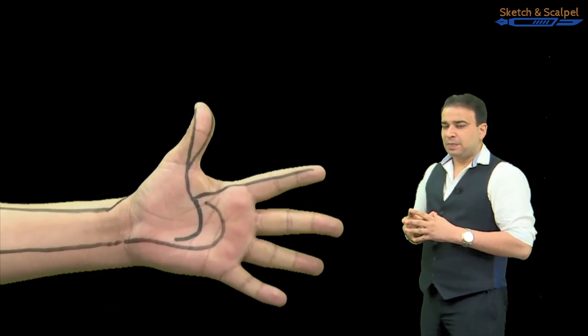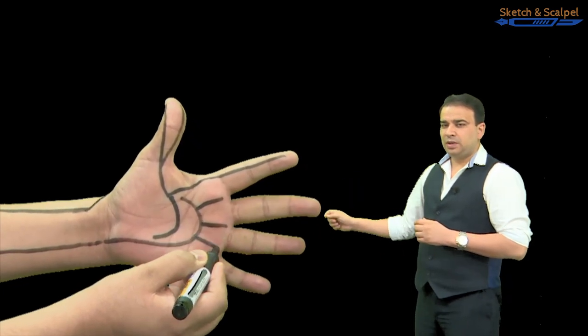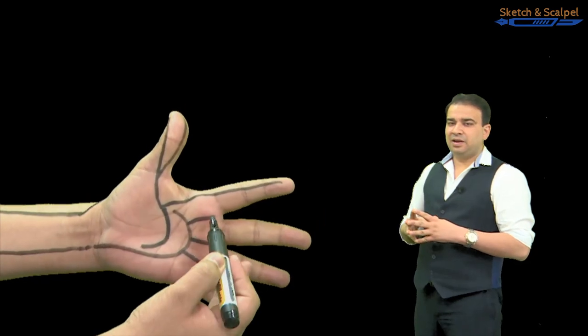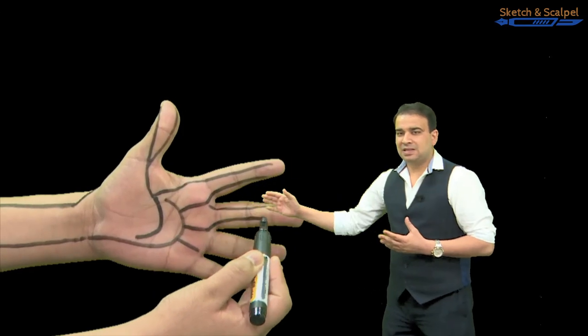Now this superficial palmar arch is a continuation of the ulnar artery and it gives off one, two, and three common digital arteries. These are the three common digital arteries. We clearly call them common digital because they further give off branches to supply the second, third, and fourth web spaces.